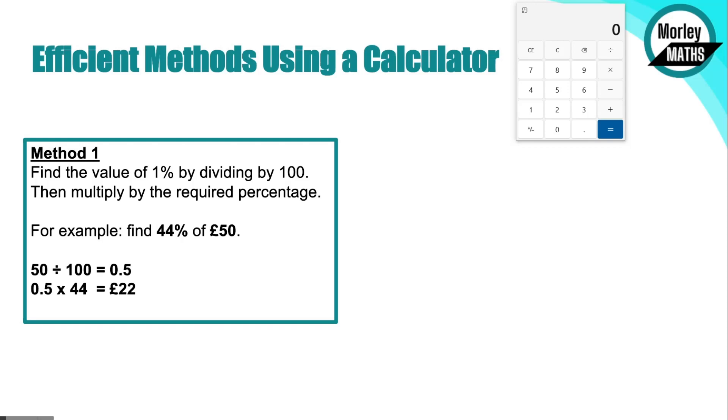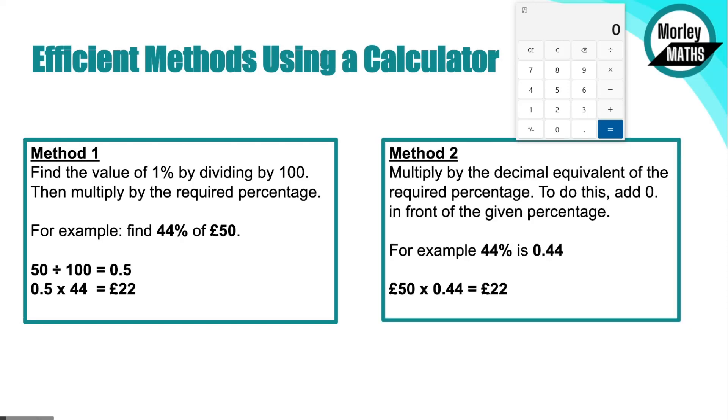Method 2 is essentially multiplying our total by the decimal equivalent of the percentage. If you're happy with fractions, decimals, and percentages and how they all relate to each other, you'll know that 0.44 is the decimal equivalent of 44%. So you can either just add a 0 point onto the front of your percentage and you've got your value. For example here, we could do 50 times 0.44 and that gives us 22 pounds straight away.